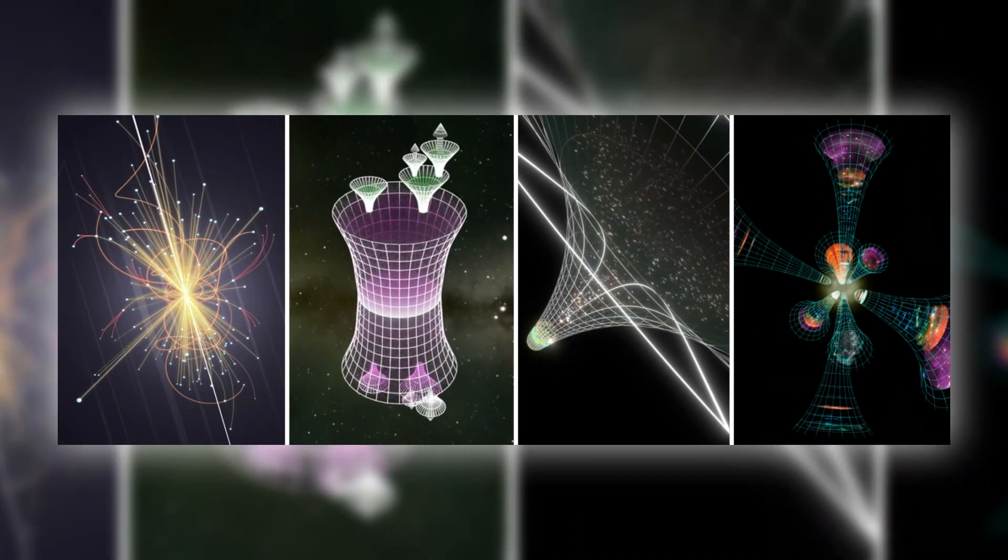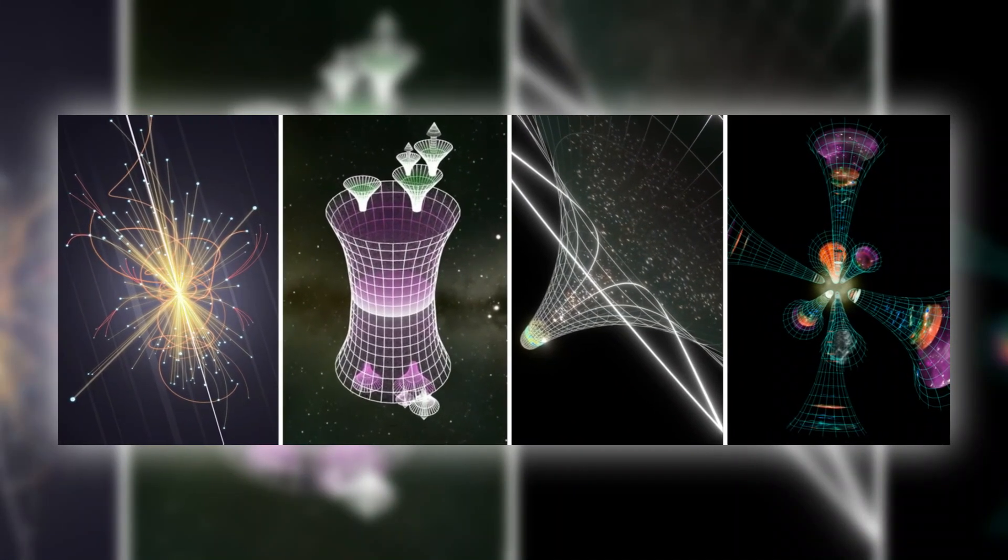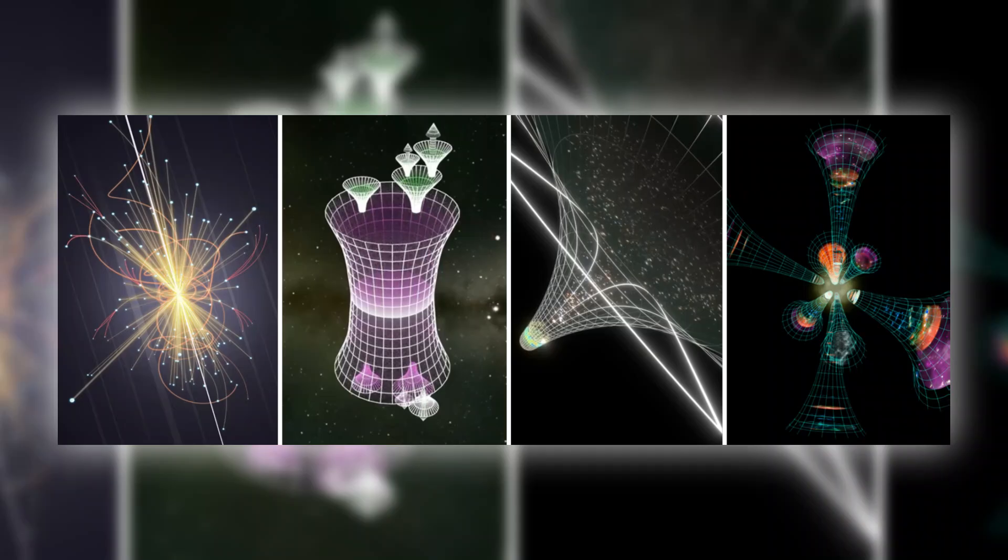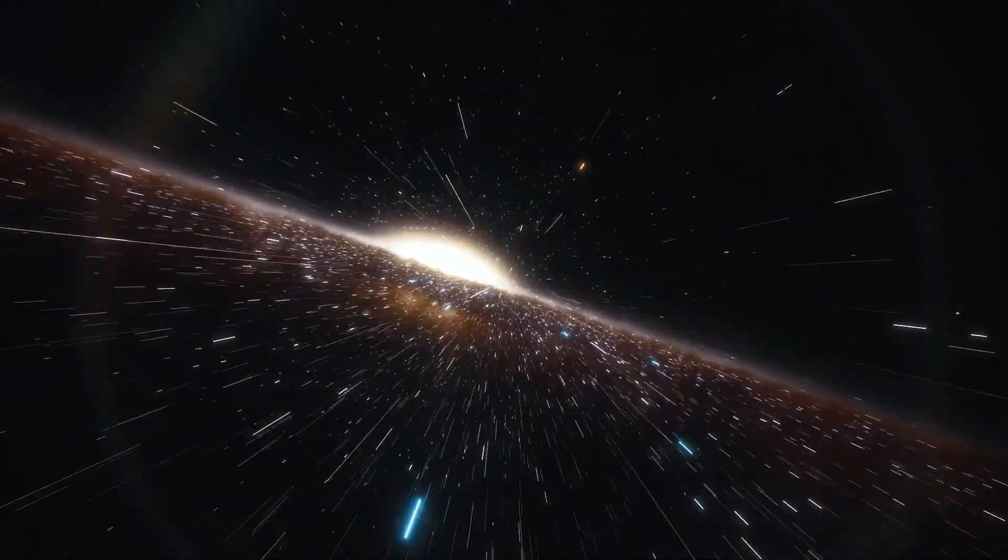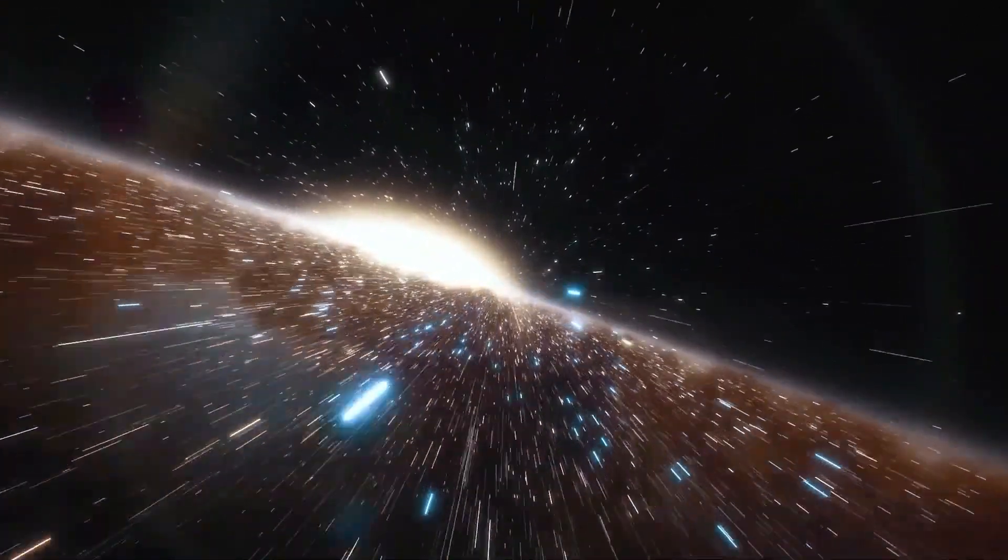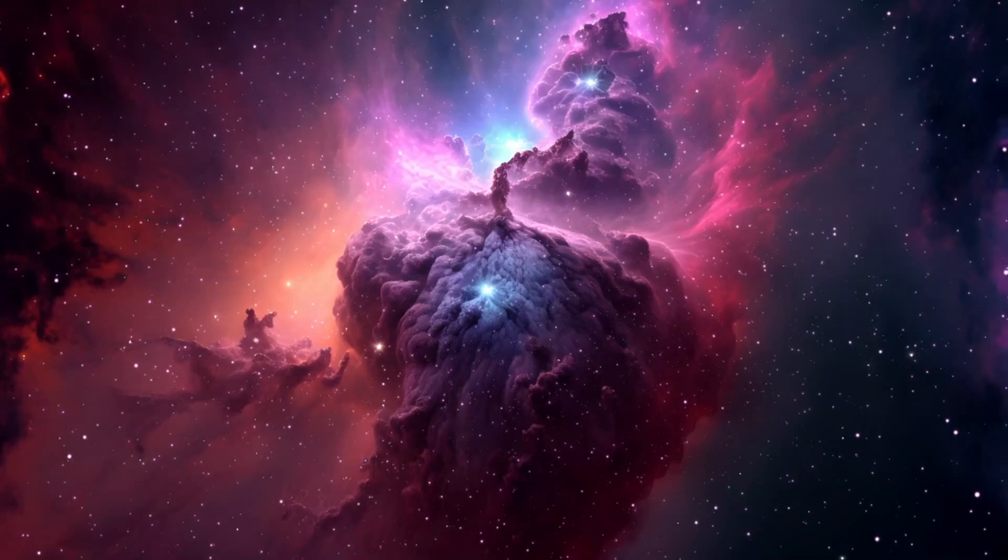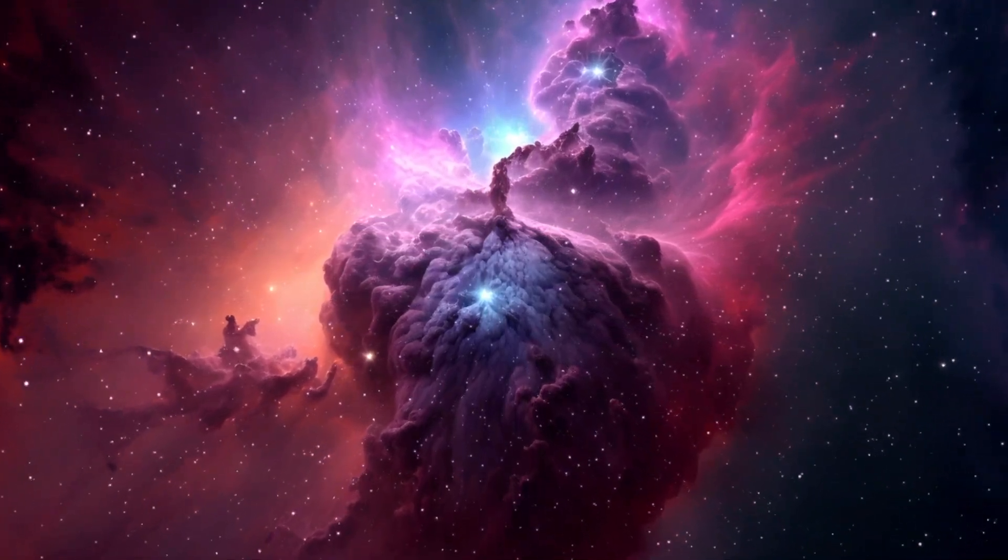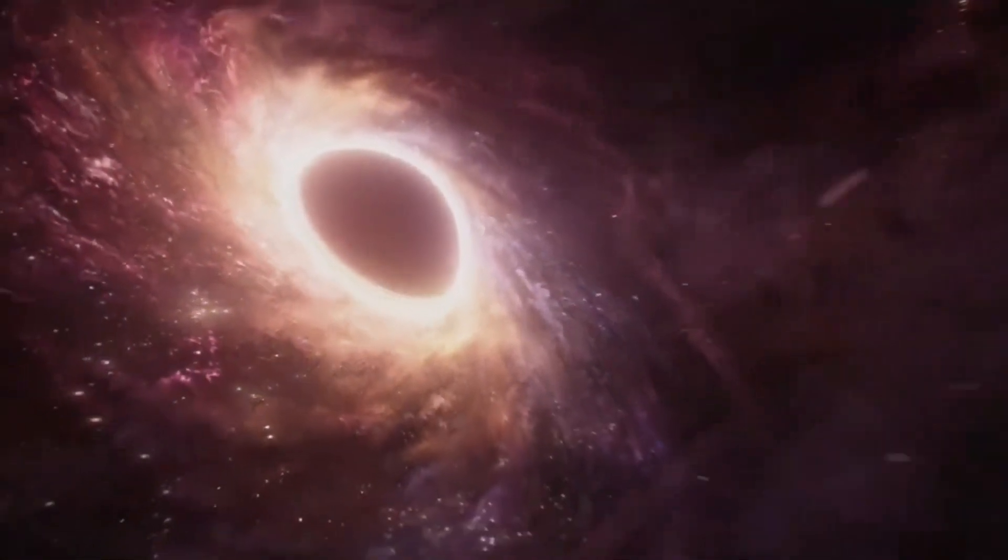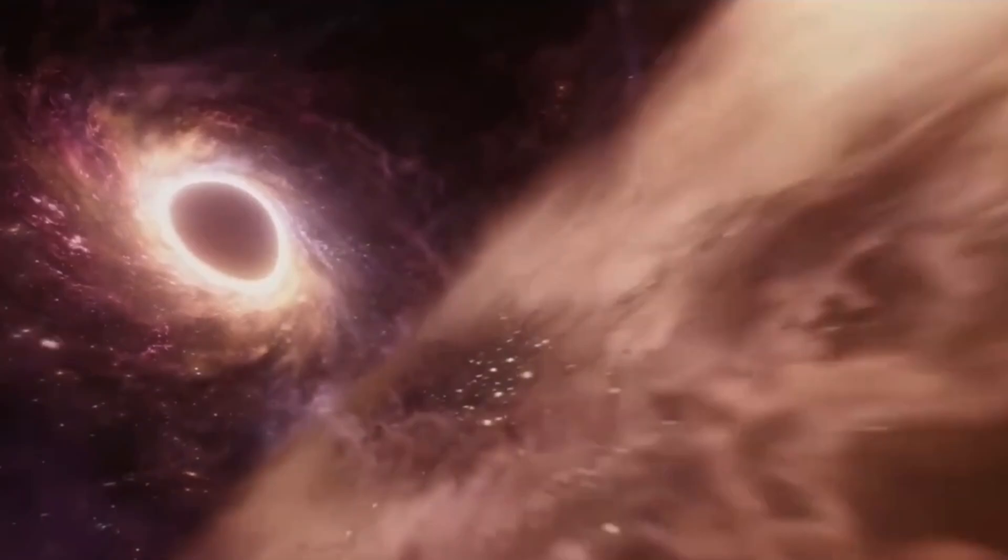Guth says that the universe's energy wasn't split up into matter and radiation particles like it is now. This energy, on the other hand, was part of space itself and grew and stretched the universe at an amazing speed. Three main problems are fixed by inflation.